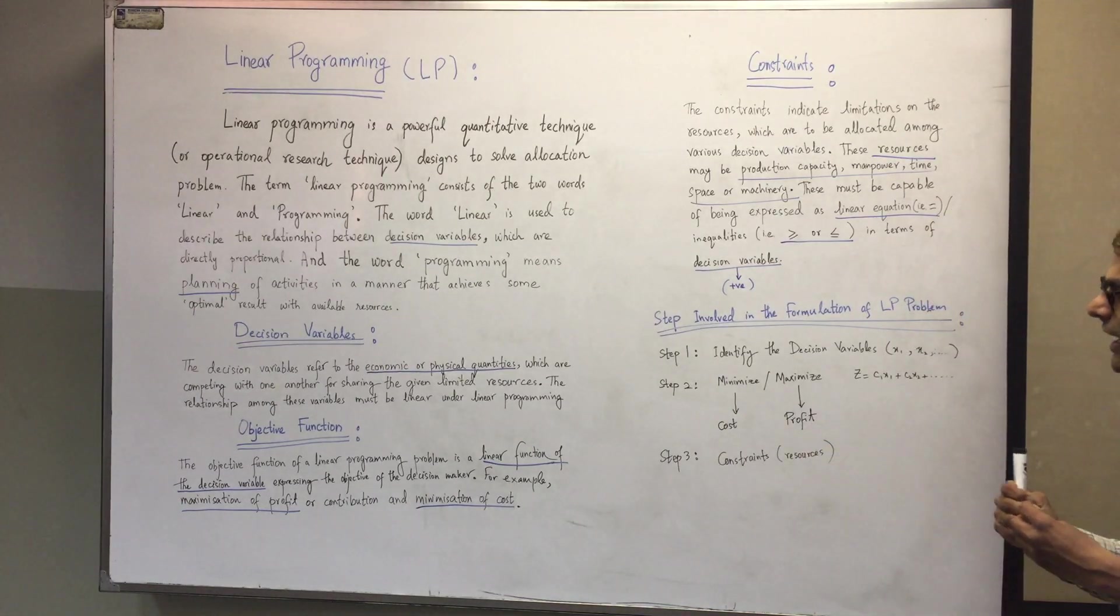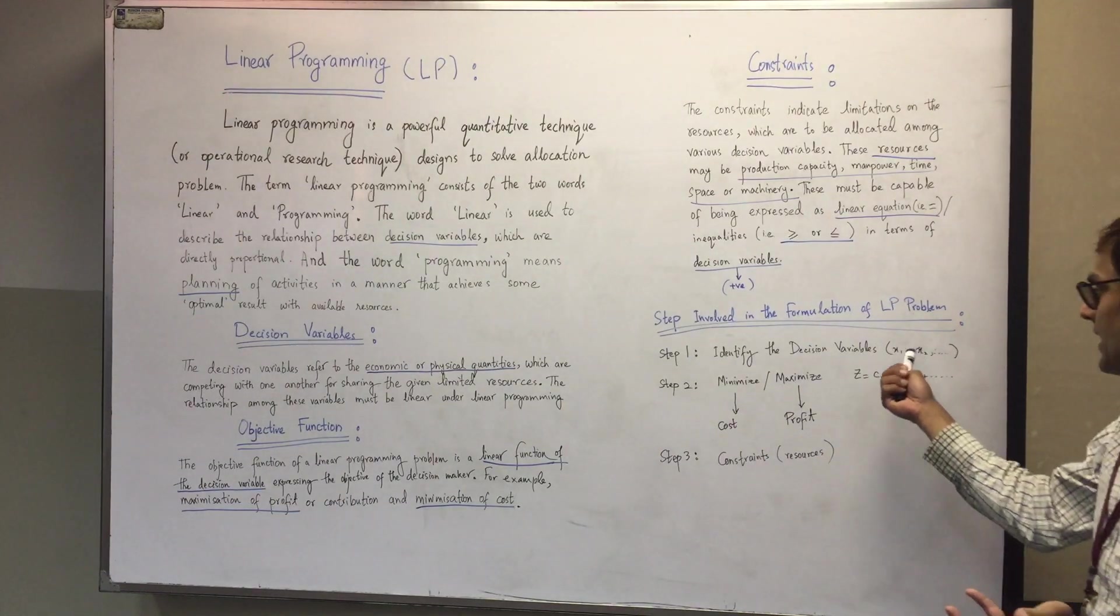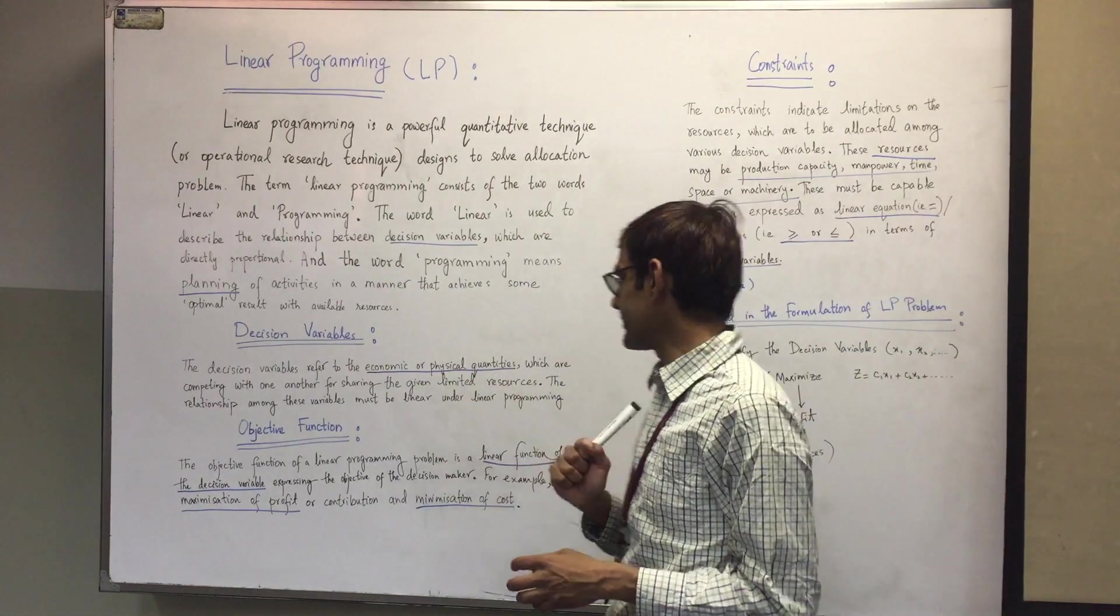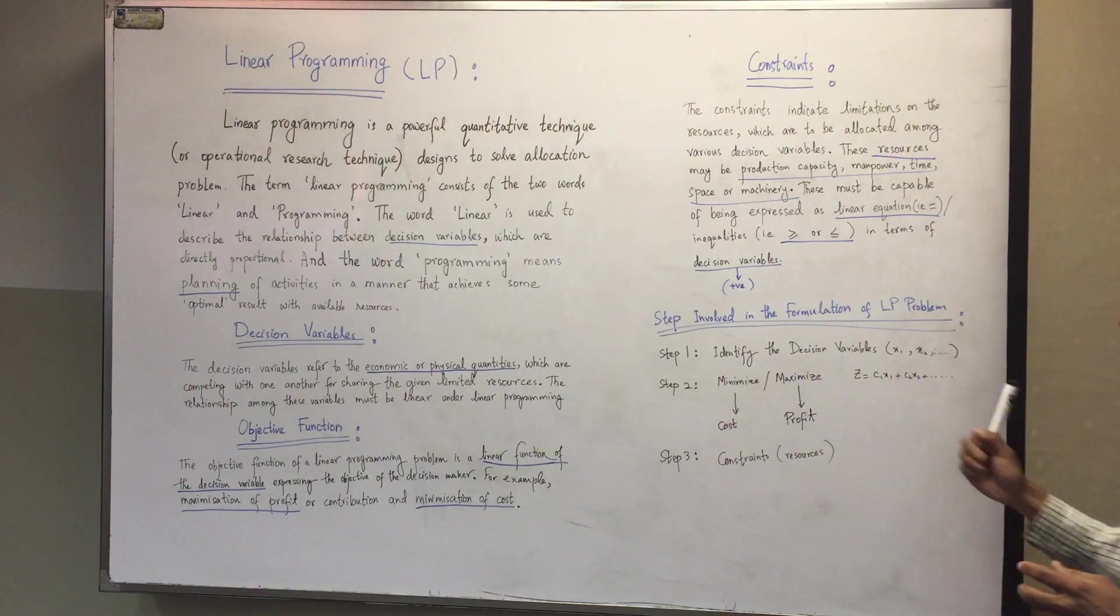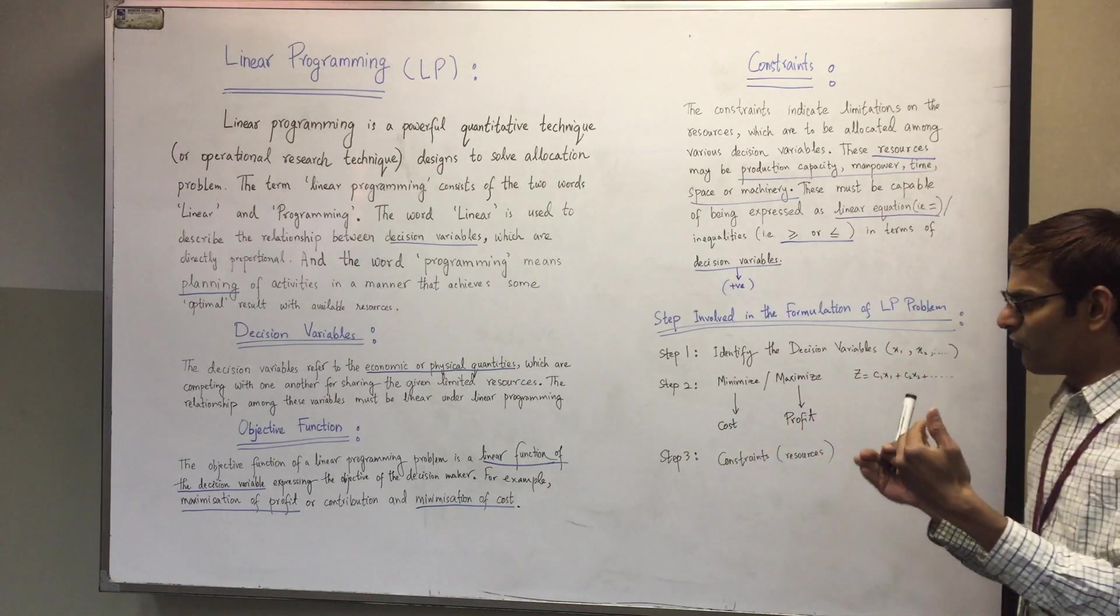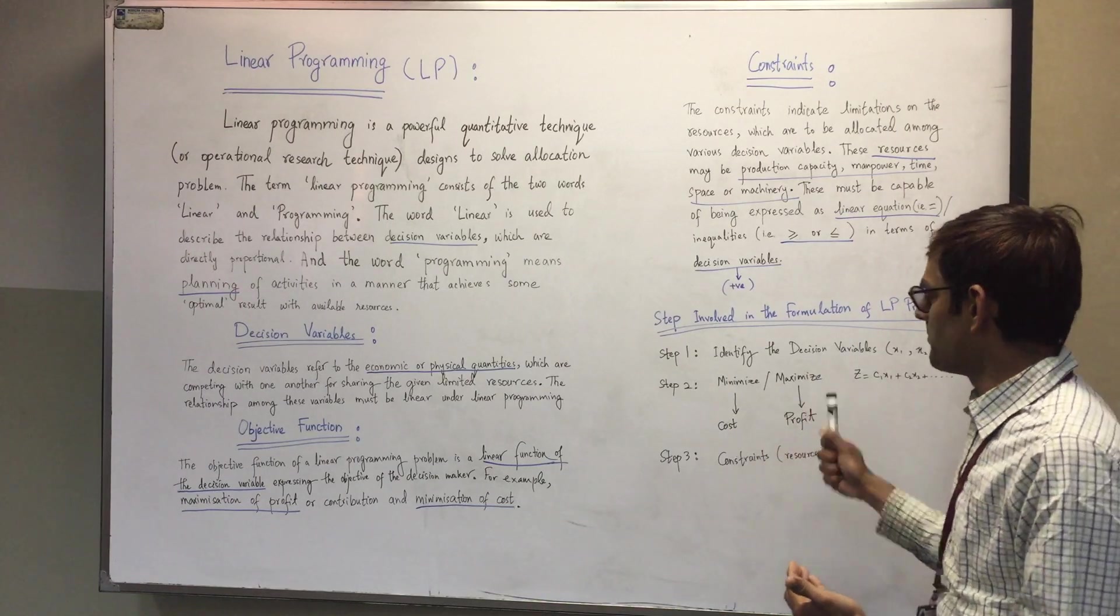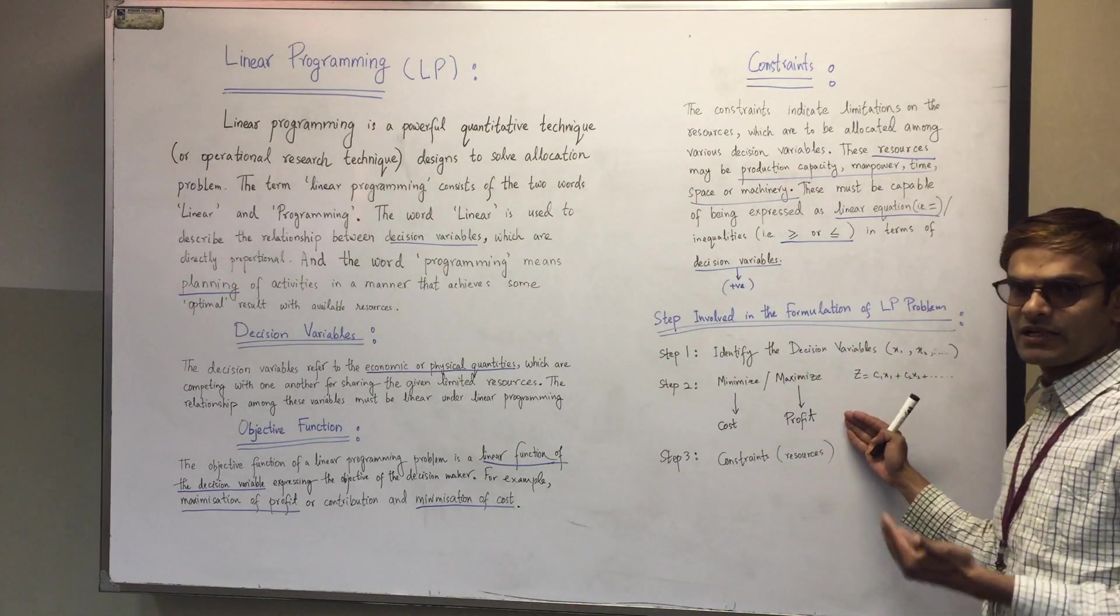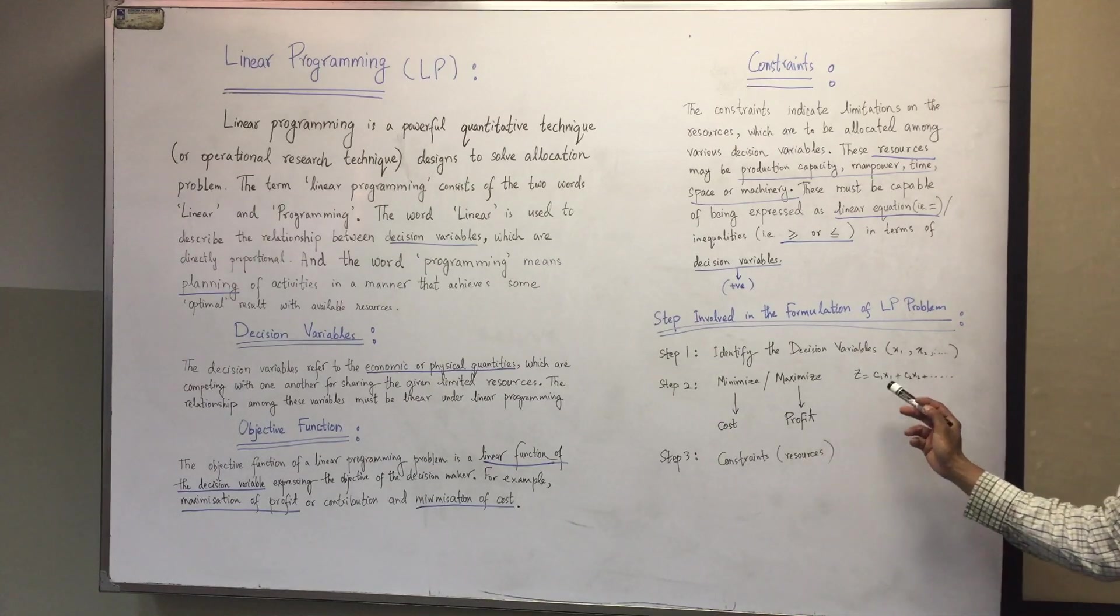First, we identify our decision variables, say x1, x2, which could be economic or physical quantities. Second step: formulate the minimization or maximization function. The minimization function could be cost, and the maximization function could be profit.